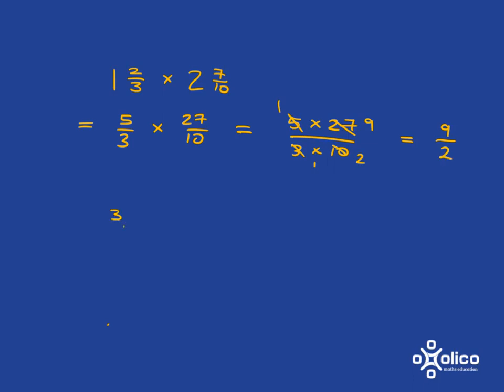And the last thing I want to just quickly show you is if you're faced with something like 3 quarters multiplied by 5, you just have to bear in mind that 5 is just 5 over 1 as a fraction. And then you can multiply numerators, multiply denominators in the way we have been all along.